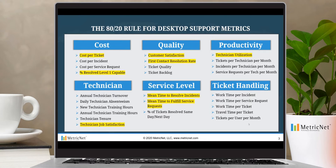It turns out that there's an 80-20 rule when it comes to the metrics of desktop support and field services, and the metrics highlighted here on slide three are the ones that really matter. You can manage a desktop support activity or a field services function very effectively with these metrics. They include cost per ticket, percent resolved, and level one capable — which is the percentage of tickets resolved by desktop support or field services that could have and should have been resolved at level one. It's a TCO metric. We also include customer satisfaction and first contact resolution rate.